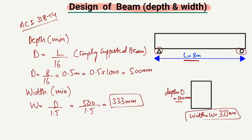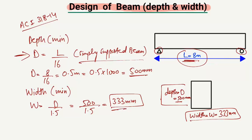We have now found the minimum width and minimum depth of the beam when the length is known. This formula is only valid for the simply supported beam — keep this in mind. If you have another type of beam, such as a cantilever, continuous beam, or overhanging beam, this formula is not valid. You should consult the codes for the appropriate formula. For this simply supported beam with a length of 8 meters, you should take a minimum depth of 500 millimeters and a width of 333 millimeters.